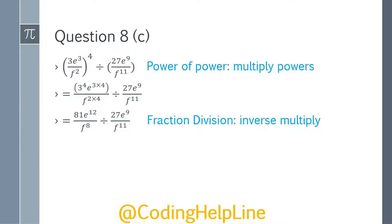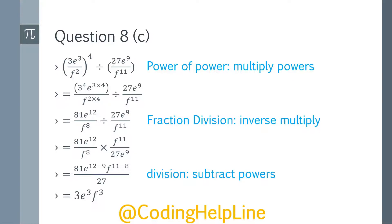By fraction division, we will inverse and multiply. So we will inverse this fraction and then multiply, giving the same numerator term and the reciprocal: f¹¹ over 27e⁹. Now we will subtract the powers since this is division. So we get e¹² minus 9 and f⁸ minus 11. Dividing 81 by 27 gives 3, e¹² minus 9 gives e³, and f¹¹ minus 8 gives f³. So the final answer is 3e³/f³. That is for question 8c.